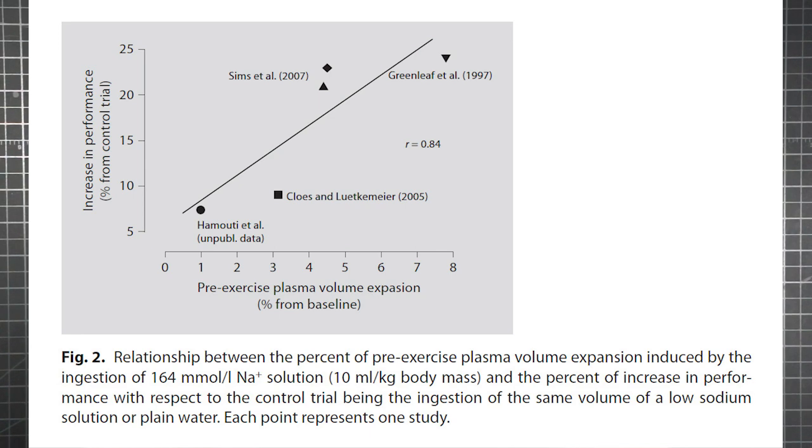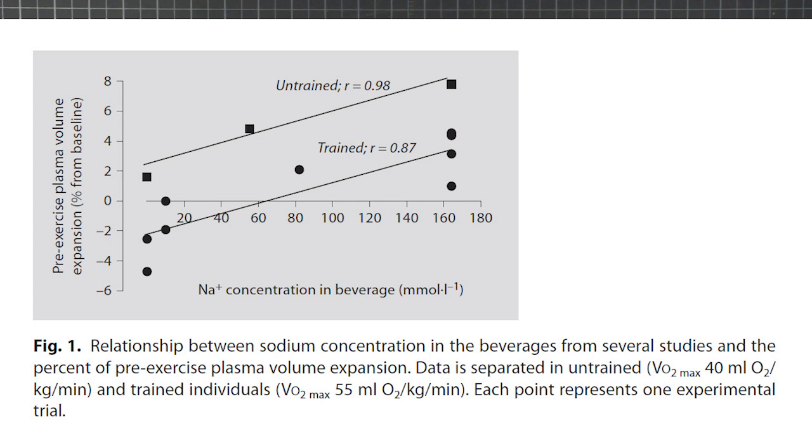The results varied between about 7 and almost 25 percent boost. The variations were based on the amount of pre-exercise plasma volume expansion. So in other words, the more your blood swells, the better you perform. To a point, of course. Figure 1 acknowledges the differences between trained and untrained individuals with the untrained experiencing a greater benefit.